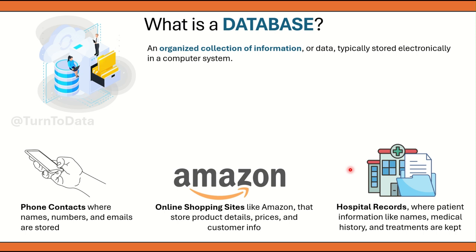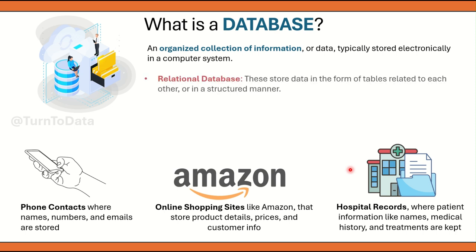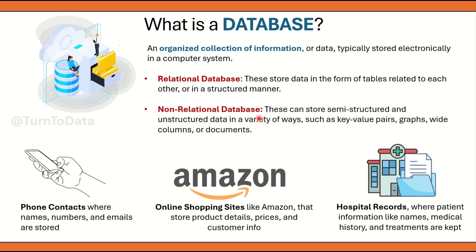Database can be categorized into two main forms. The first type is relational database. These store data in the form of tables where there are columns and rows, and these are related to each other. A single database can have multiple tables and each table may have some relation with the others. Relational databases store structured data. The second type is non-relational database. These can store semi-structured and unstructured data in a variety of ways, such as key-value pairs, graphs, and documents.